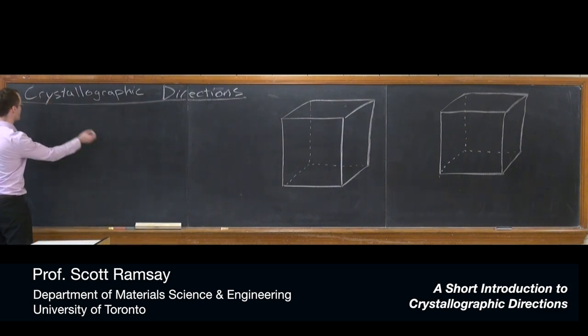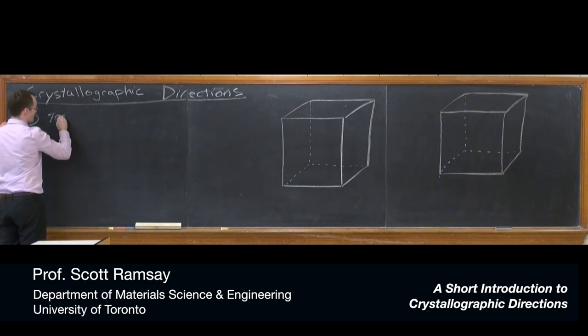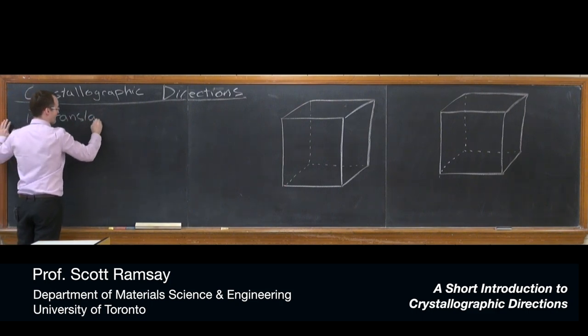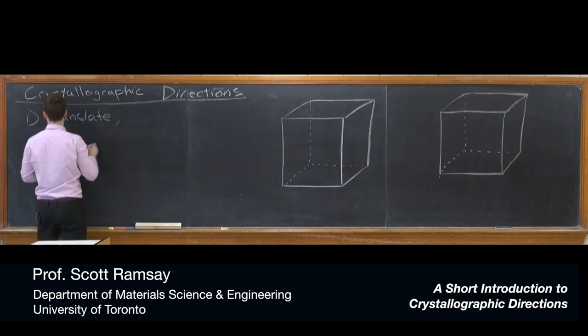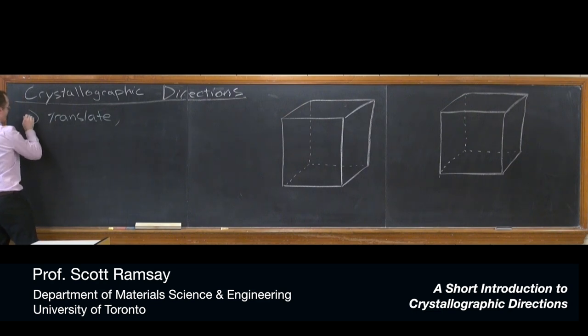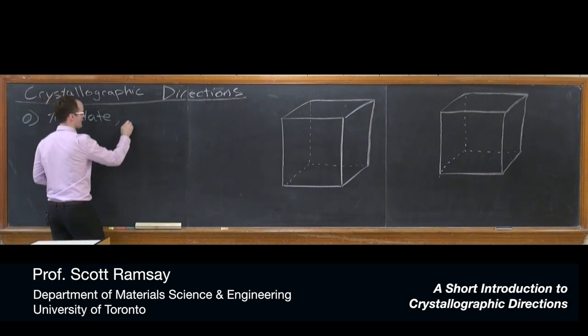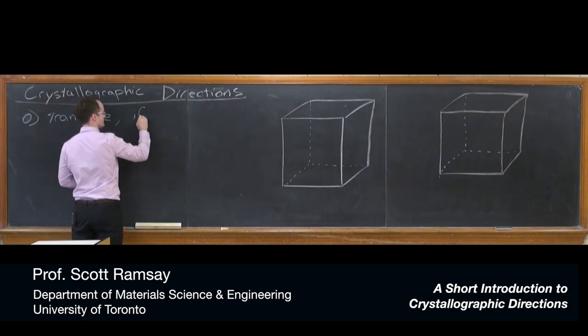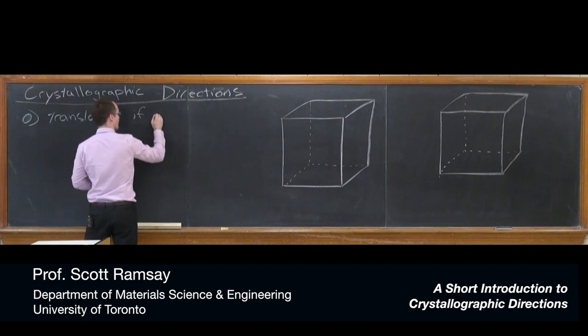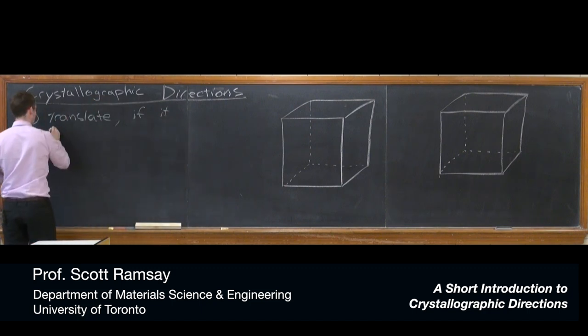So the process for determining a crystallographic direction is first to appreciate you can translate the vector if necessary. I'm going to call that point 0. Translate if it simplifies things, and you'll see some examples of that.